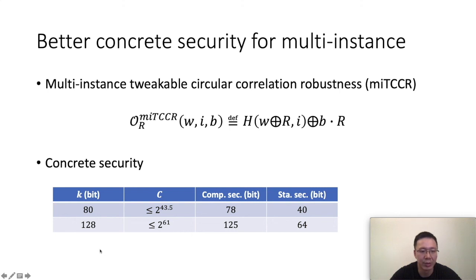From that bound, we can get two important instructions for our implementation. If we garble circuits with 80-bit labels and the total number of AND gates is less than 2^43, then we can get 78-bit of computational security. If we garble circuits using the 128-bit label, and the total number of AND gates is less than 2^61, we can get 125-bit of computational security.